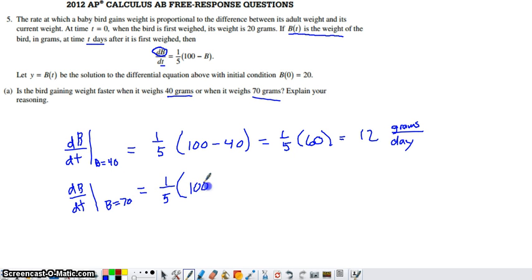And to determine that, we're doing the exact same thing. We're just tossing 70 in place of B. That's a measure of the weight of the bird. And that's exactly what B represents. So we go ahead and evaluate this. We're looking at 30 in the parentheses. One-fifth times 30, one-fifth of 30, is going to be 6 grams per day.